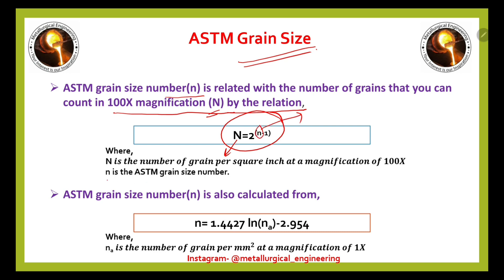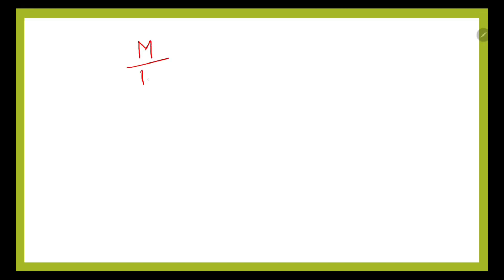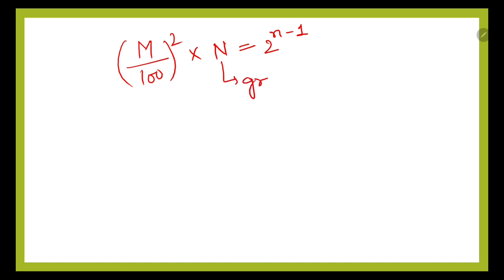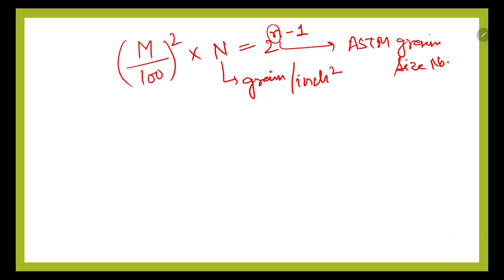We can see this formula as: (M/100) squared times grains per inch square equals 2 to the power (n minus 1), where n refers to grains per inch square, small n refers to the ASTM grain size number, and M is the magnification at which we require the grains per inch square.